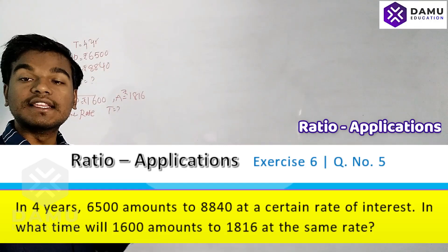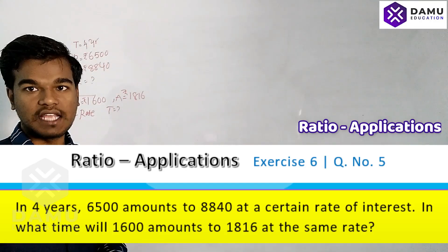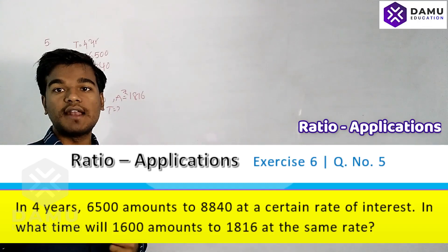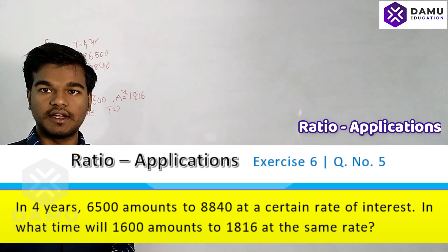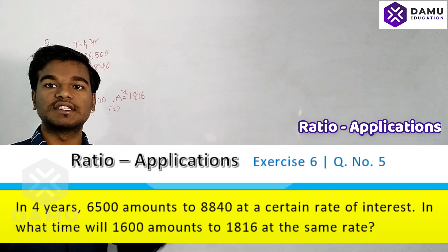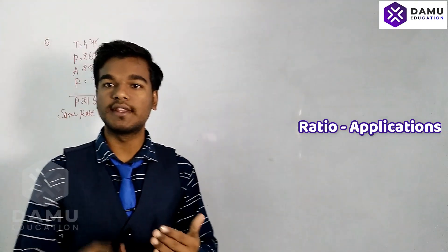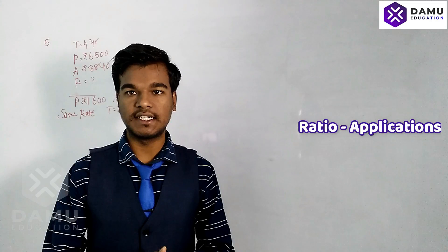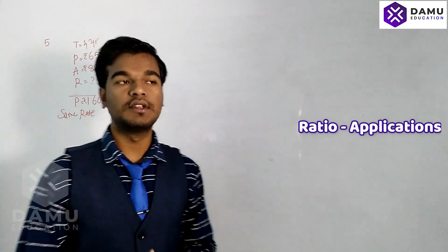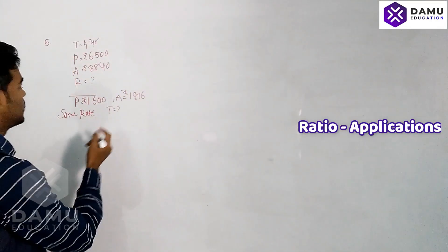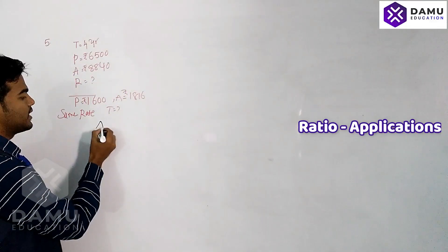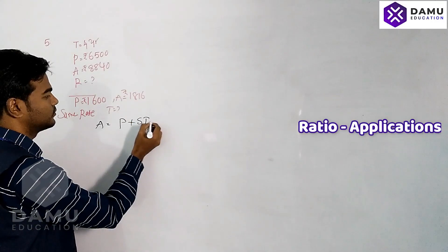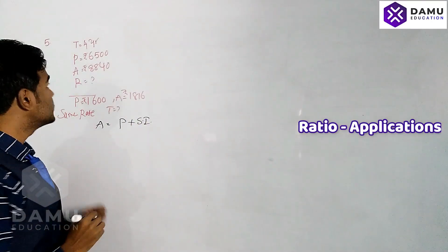From the first given values we are going to calculate the rate of interest. After that, that rate of interest we are going to substitute into the second set of values, then we are going to find what is the time. Here, amount equals principal plus simple interest.